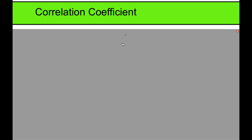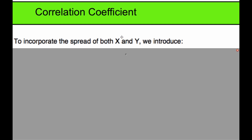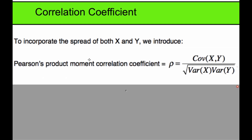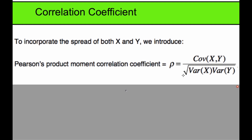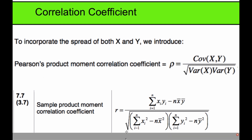In this video we're going to talk about the correlation coefficient. It incorporates the spread of both x and y, and that's where we introduce the Pearson's product moment correlation coefficient — rho or sometimes r. Rho is for the population, r is the statistic. This is the formula for rho: the covariance over the square root of the variance of x times the variance of y. In your formula booklet, this is the formula you have for r, and they don't look the same.